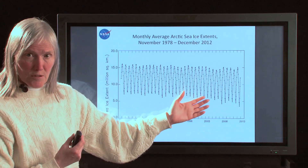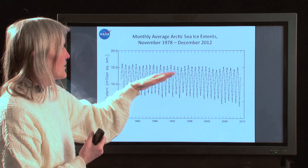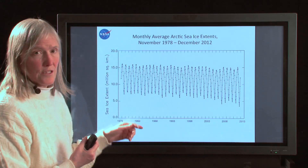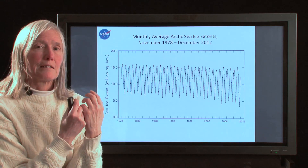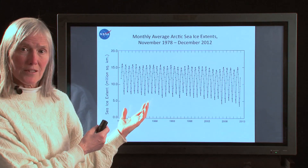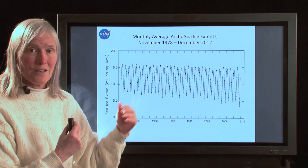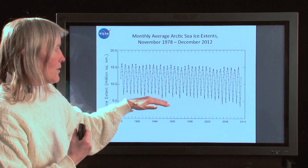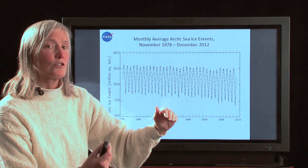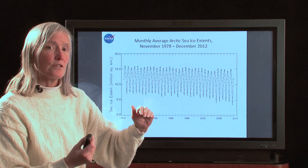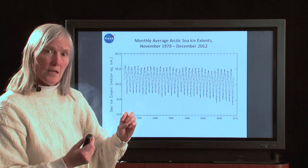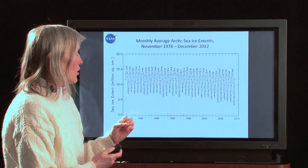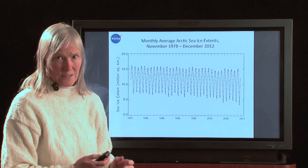When you look at this plot, because the seasonal cycle is so strong — so much more ice in the winter than in the summer — that's what comes out in a plot when you see the monthly averages. Way more ice in the winter than in the summer. However, we're also interested, in addition to the seasonal cycle, in how it has been changing over time. And so we want to remove the seasonal cycle.